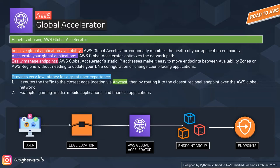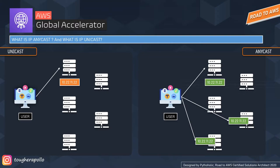AWS Global Accelerators route traffic to the closest edge location via anycast, then to the closest regional endpoint over the AWS global network. As we move toward understanding the actual architecture of AWS Global Accelerators, you must understand the difference between anycast and unicast very carefully. Everyone should be aware of network addressing and routing methodologies — some of them are broadcast, multicast, unicast, and anycast.